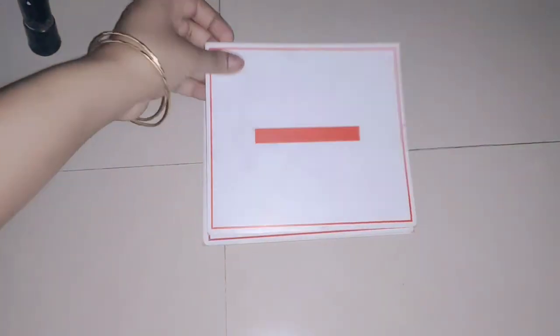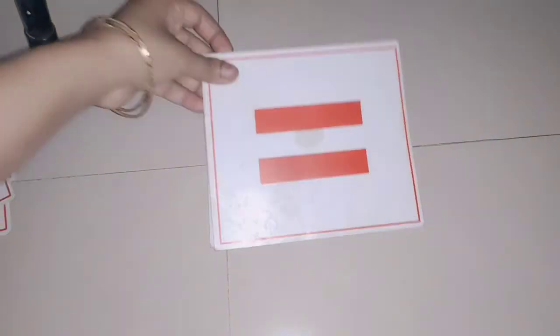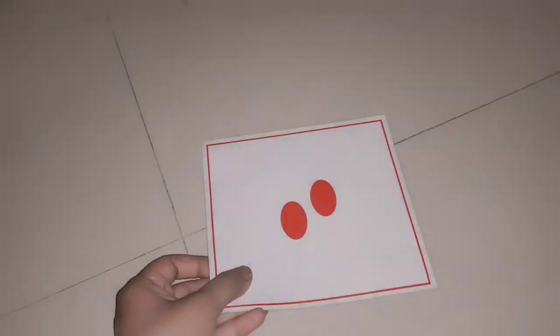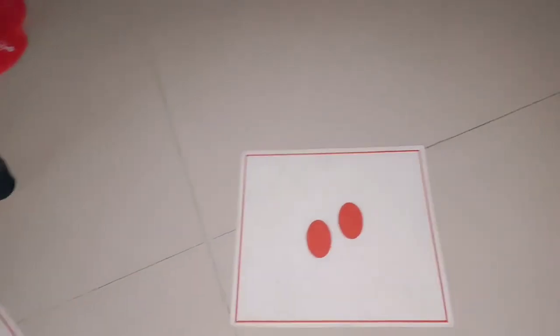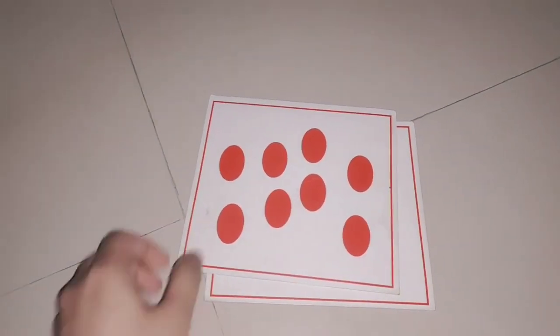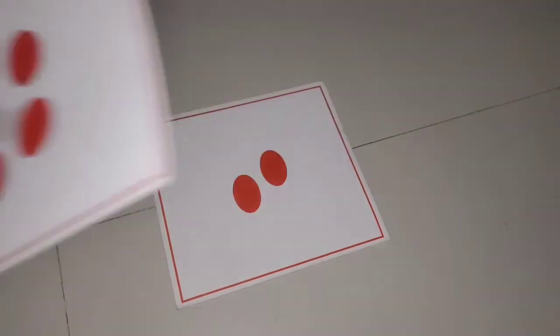Another one is 3 minus 1 is equal to 2. Another one is 2 into 2 into 2 becomes 8. These are the 8 dot cards. Cube of 2, you can tell your child, cube of 2 is equal to 8 in this way.